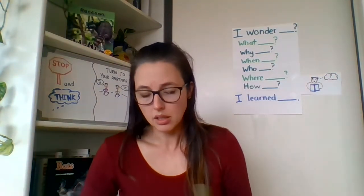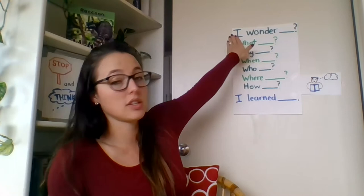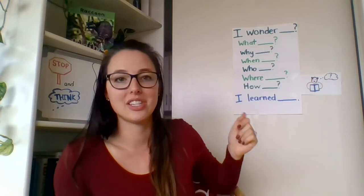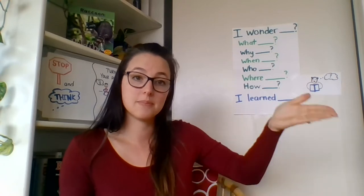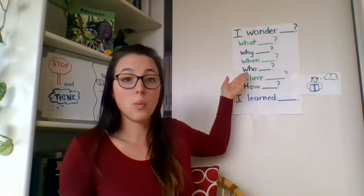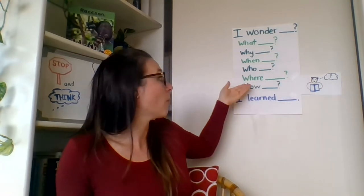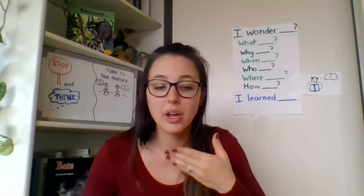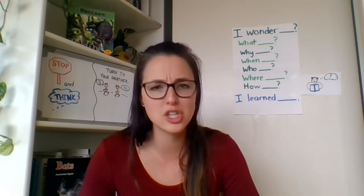We're going to keep reading, and remember we're going to practice our wondering strategy. That means we're going to use our sentence stems: 'I wonder...' You might be specific with your question and use the word what, or why, or when, or who, or where, or how. And I want you to think: what do you want to learn about butterflies? What do you wonder about butterflies?